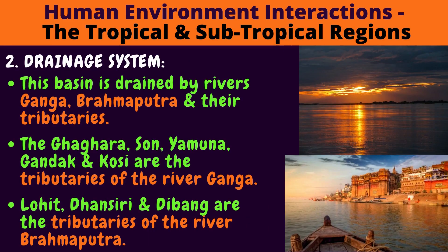Drainage System: This basin is drained by rivers Ganga and Brahmaputra and their tributaries. Look at the first picture — isn't it beautiful? That is the Brahmaputra. The Ghagra, Saun, Yamuna, Gandak and Kosi are the tributaries of the river Ganga. Lohit, Dhanasiri and Dibang are the tributaries of the river Brahmaputra. Look at the second picture — that's a picture of the river Ganga.